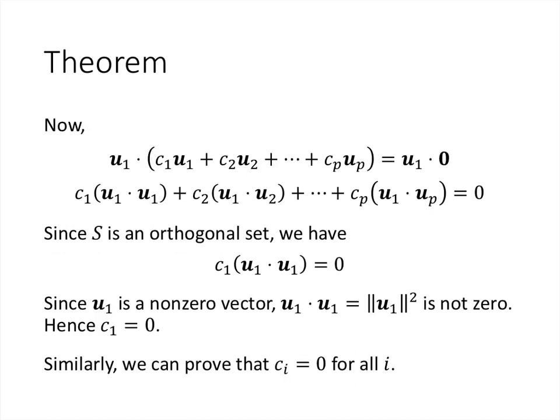What we're going to do is dot u1 by both sides of this equation — take u1 dot the left-hand side, which must equal u1 dot the right-hand side. On the right-hand side, any time we dot a vector with the zero vector we get 0. On the left-hand side, we use the distributive properties of the dot product. We distribute u1 across all the terms in the parentheses, so in the first case we get u1 dot c1 u1, but then we can pull the c1 out. We do that with each term on the left-hand side.